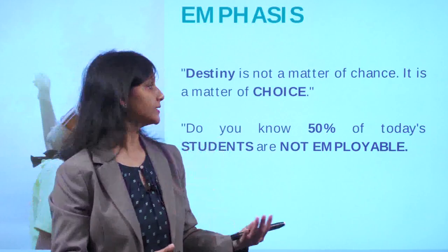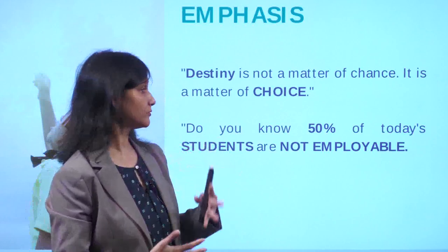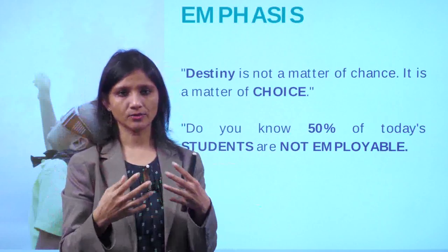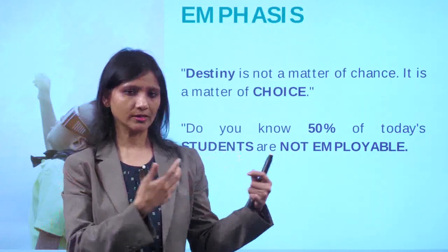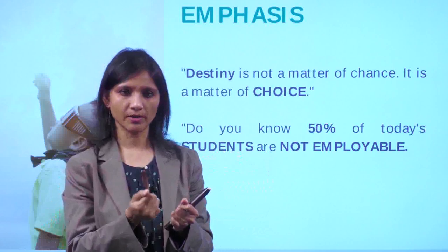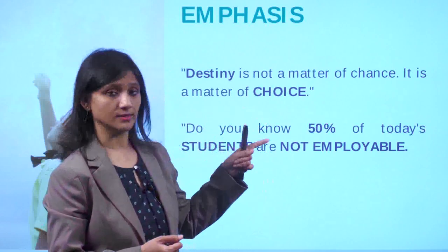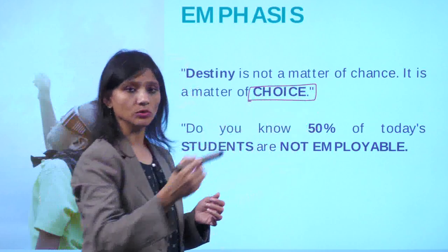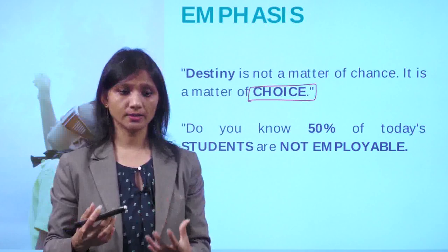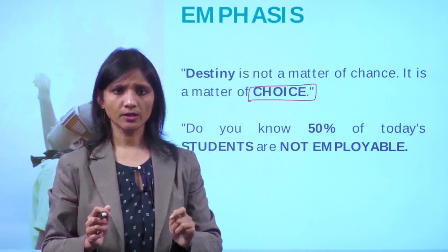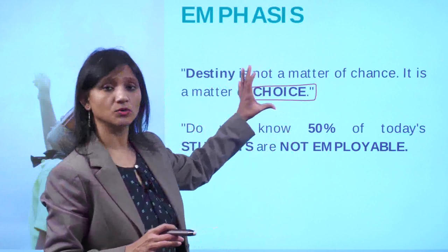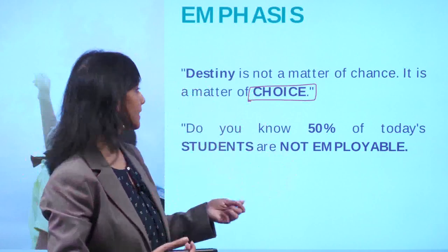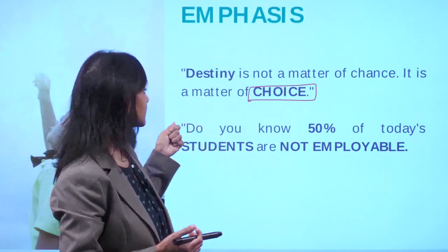If I read it just like that - 'Destiny is not a matter of chance, it's a matter of choice' - I do not strike a chord, I do not connect, I do not express. But the same sentence, when used in my speech with a particular quotation: 'Destiny is not a matter of chance, it is a matter of choice.' The most important word here is 'choice,' which is why I've made it bold. I'll read it aloud once again: 'Destiny is not a matter of chance, it is a matter of...'